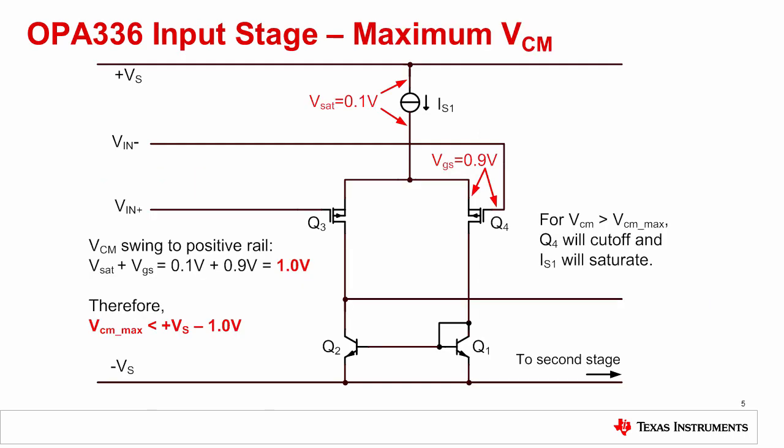Let's consider the input swing to the positive rail for the OPA336, a typical MOSFET device. This example schematic is a simplified version of the actual device schematic, but it is representative of the types of issues that limit common mode range. In this example, the maximum voltage on an input pin can be calculated by performing a Kirchhoff's voltage walk from either input pin to the positive supply. Starting at VN- and walking to +VS, we see the gate to source voltage of Q4 plus the saturation voltage of the current source IS1. Typical numbers for these voltage drops are 0.9 volts for VGS and 0.1 volts for the current source VSat for a total of 1 volt. Thus, the input common mode voltage can swing to within 1 volt of the positive supply. That is, VN must be less than +VS minus 1 volt. Driving the input to a voltage greater than this will cause the transistor Q4 to cut off, and the transistor in IS1 to saturate, giving a non-linear response.